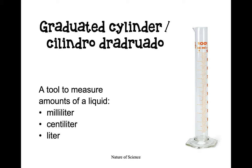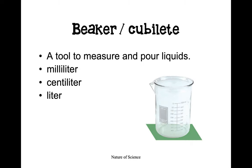For example, if we wanted to measure how much water is in a swimming pool, we'd probably use liters. However, if I wanted to see how much water was in a spoonful of water, I'd probably use milliliters. We also have a beaker — a beaker is a tool used to measure and pour liquids. If you look to the side, you can see it's marked off in mL, which stands for milliliters. Like a graduated cylinder, it can also measure the volume of liquids.